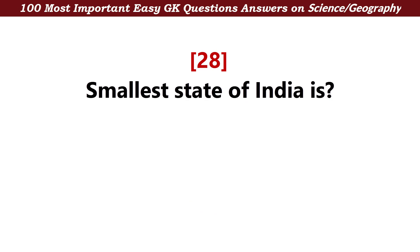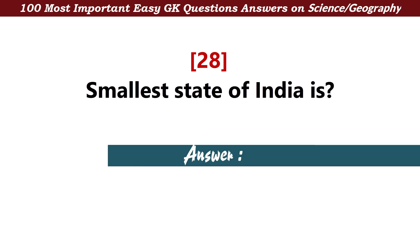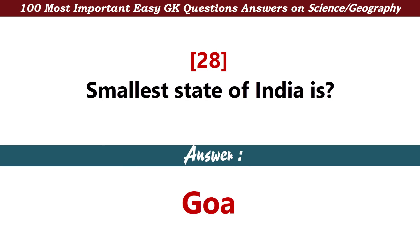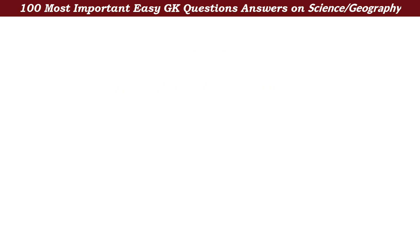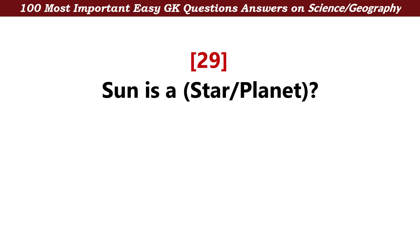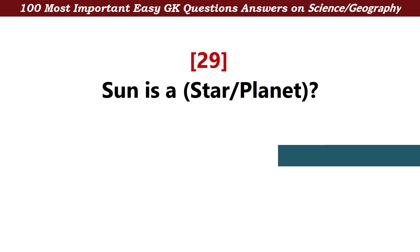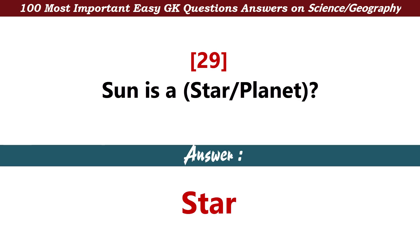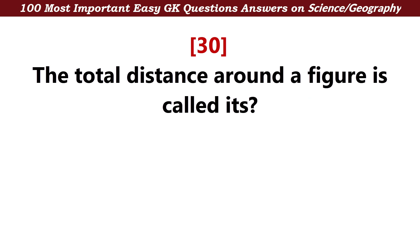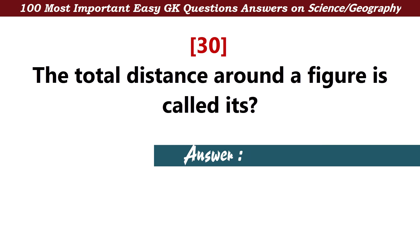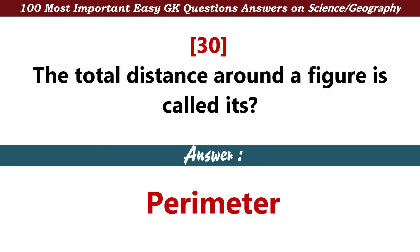Smallest state of India is — Answer: Goa. Sun is a star or planet? Answer: Star. Total distance around a figure is called — Answer: Perimeter.